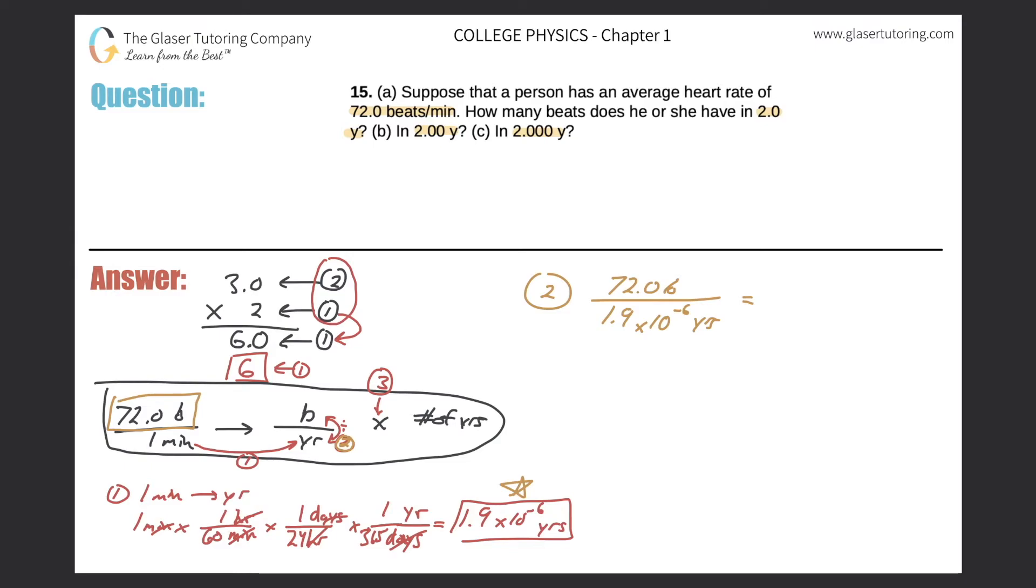It should be a large number. It comes out, I'm going to round slightly, it comes out to about 3.78 times 10 to the 7 beats per year. That's per one year. Great, now that's the answer to the second step.